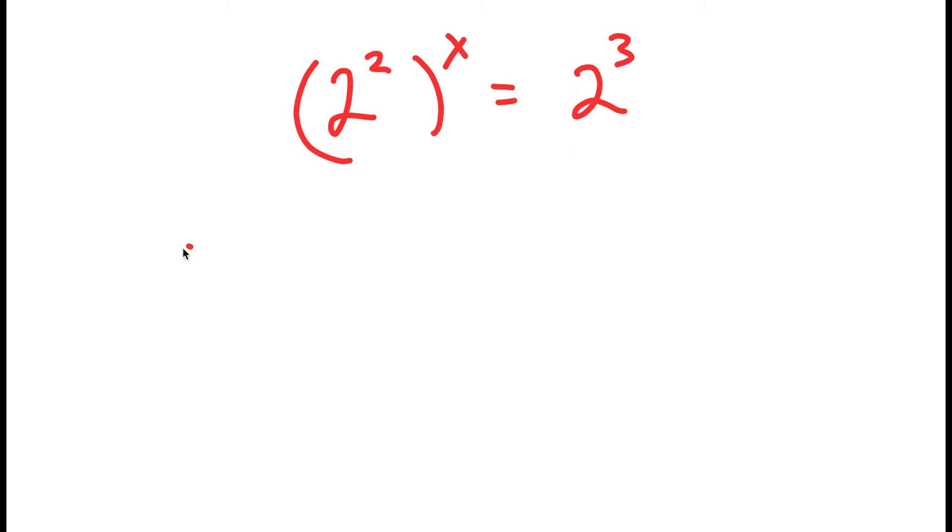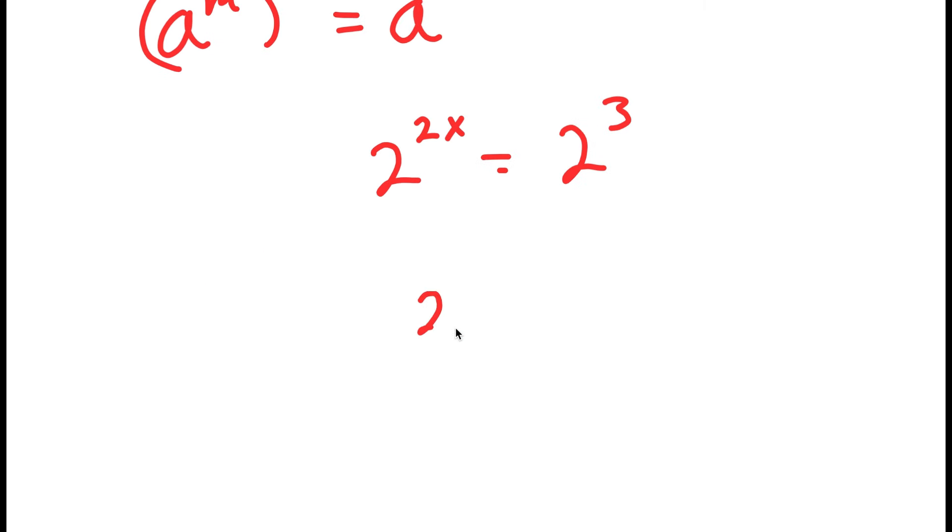So now I can use the property a to the power of m to the power of n is equal to a to the power of m times n on 2 squared to the power of x. So that turns to 2 to the power of 2x is equal to 2 to the power of 3, meaning that 2x is equal to 3 and x is equal to 3 over 2.